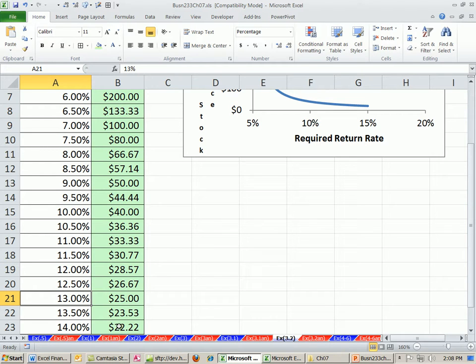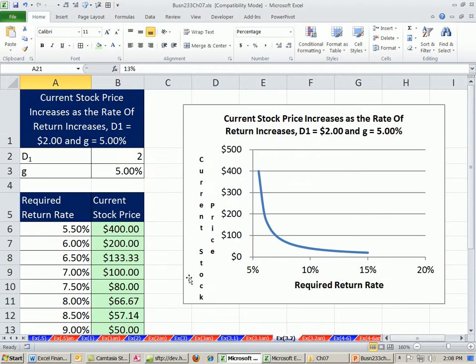We saw this relationship most prominently in the bond chapter. But it's true for any discounting. As the discount rate goes up, the price or the value or the current value goes down.